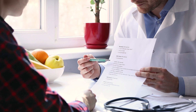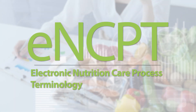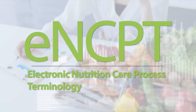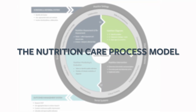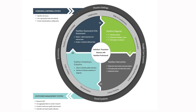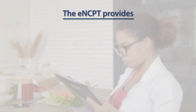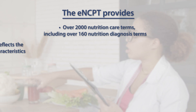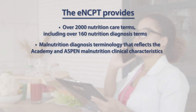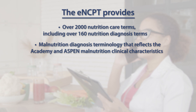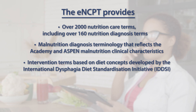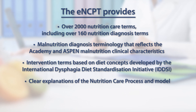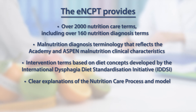Maintained by an Academy Committee of Experienced Registered Dietitian Nutritionists, the electronic nutrition care process terminology helps nutrition professionals incorporate the NCP into their workflow. The ENCPT also helps to meet workflow requirements for RDNs and NDTRs providing individualized nutrition care. The ENCPT provides over 2,000 nutrition care terms, including over 160 nutrition diagnosis terms, the most current malnutrition diagnosis terminology reflecting the Academy and Aspen malnutrition clinical characteristics, and intervention terms based on diet concepts developed by the International Dysphagia Diet Standardization Initiative, along with clear explanations of the nutrition care process and model and sample patient documentation.